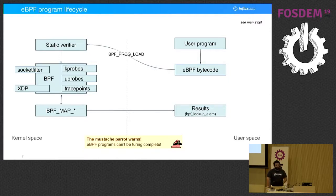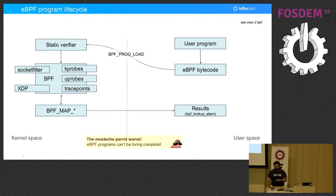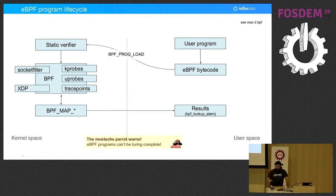BPF programs are not Turing complete — you cannot do loops, because the static verifier doesn't allow it. But if your loop is over a fixed set of elements you know at compile time — like a list of IPs for your network interfaces — you can unroll the loop with a pragma in your compiler, or just write the thing out 10 times.